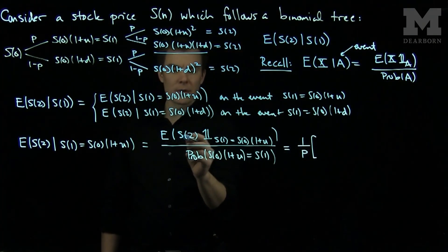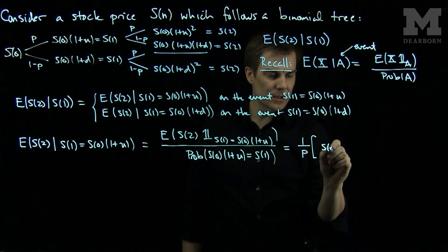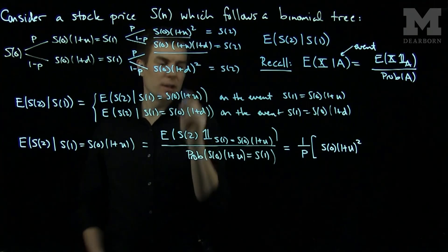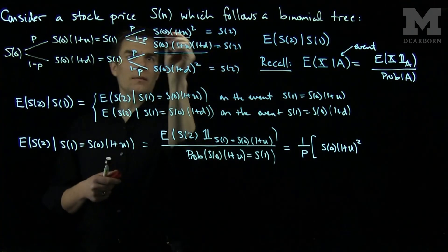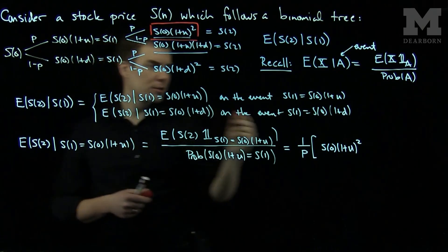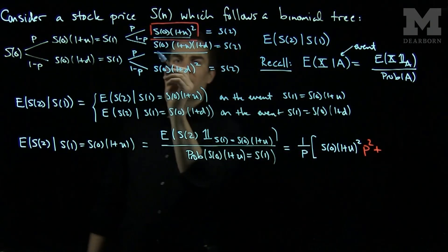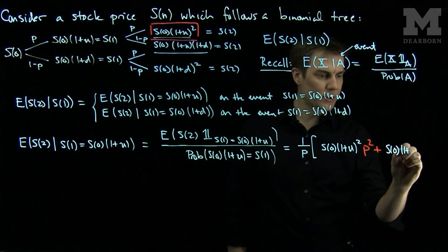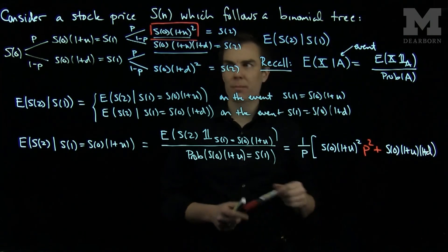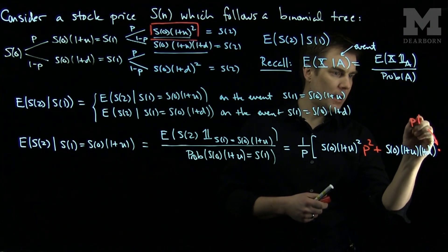Now I have to figure out the expected value of S2. There are going to be two possible values of S2. The first possible value is S0(1+u)², and this occurs with probability p·p, so it is multiplied by p². Plus, the other value can be S0(1+u)(1+d), and this occurs with probability p·(1-p).